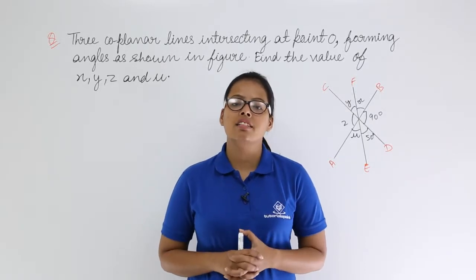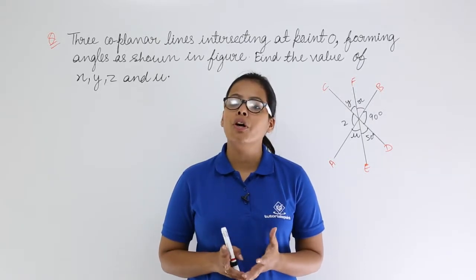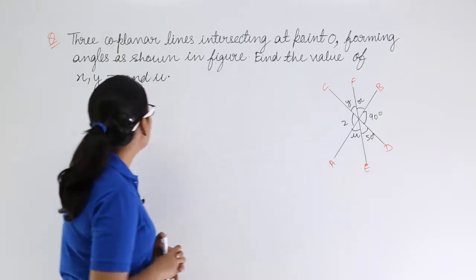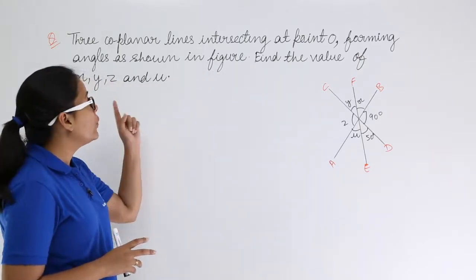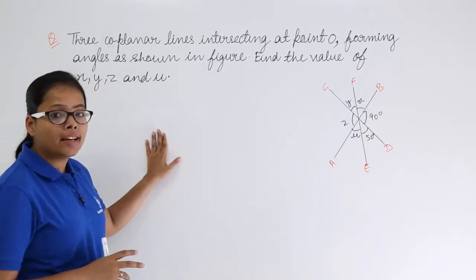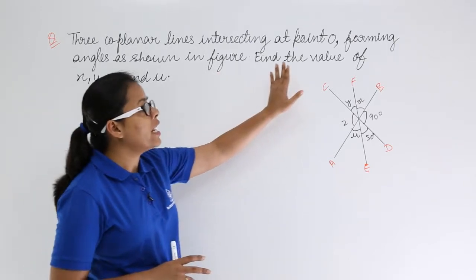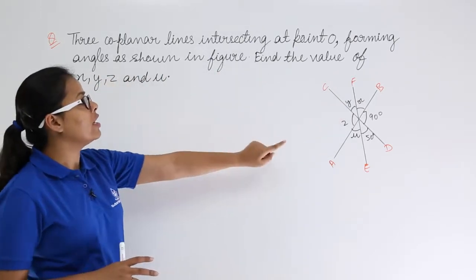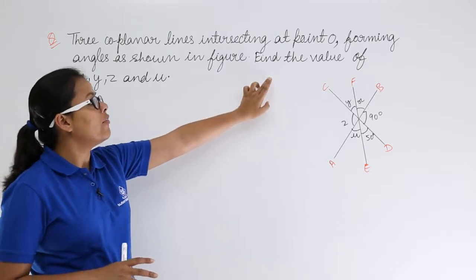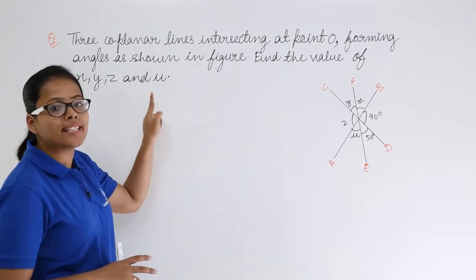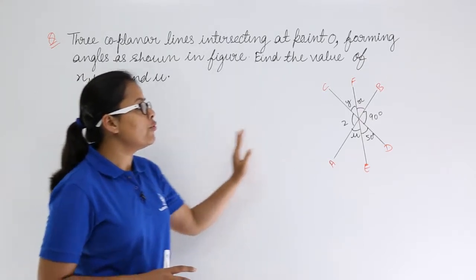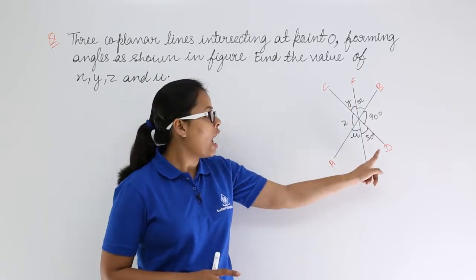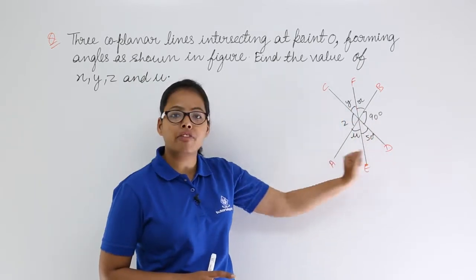Hello guys, let's discuss this problem on lines and angles from R.D. Sharma. Our problem is: three coplanar lines intersecting at point O, forming angles as shown in the figure. We need to find the value of x, y, z, and u. We have been given 90 degrees and 50 degrees.